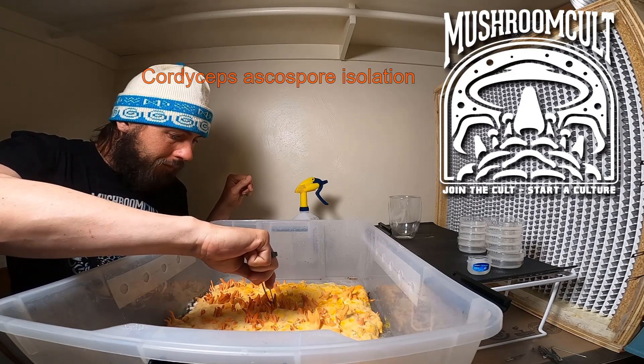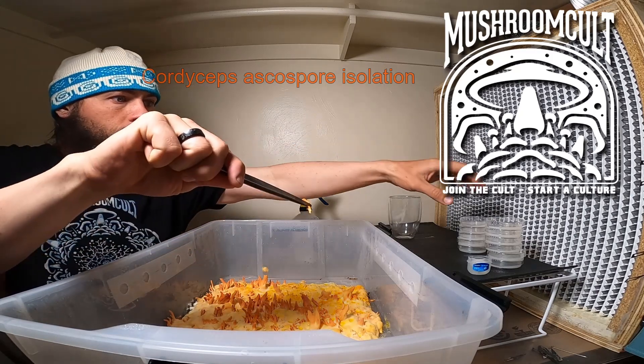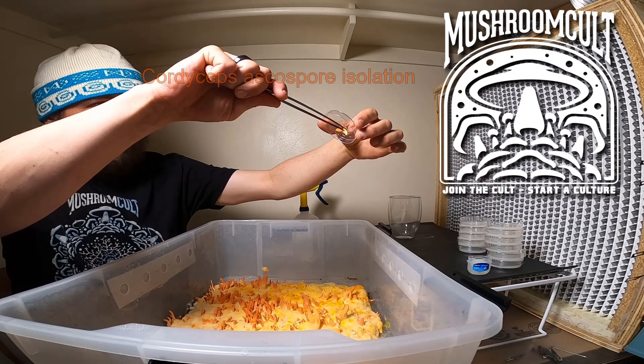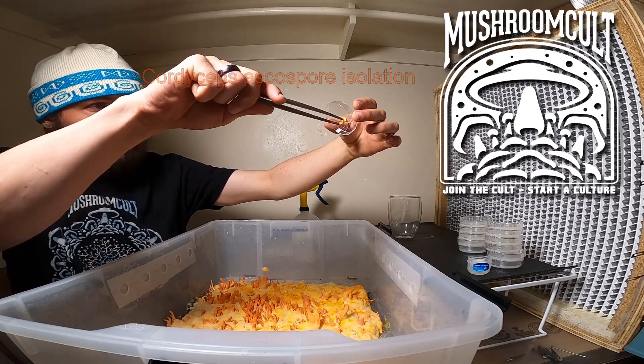This is our first fruiting. We're gonna pluck one of these sporocarps up and attach it to the Vaseline on the lid of a petri dish.